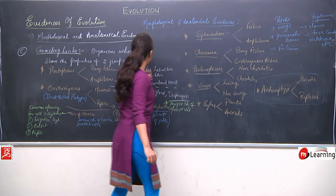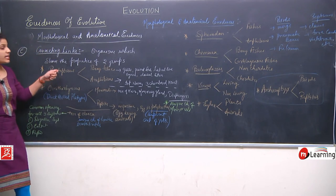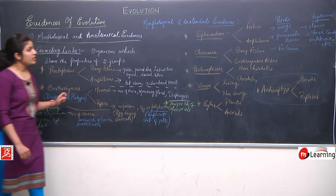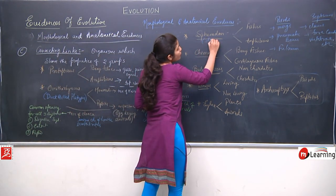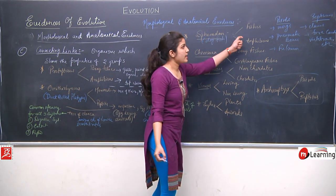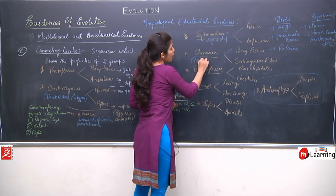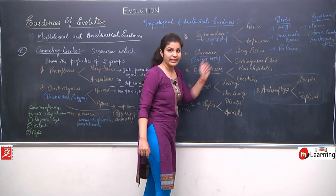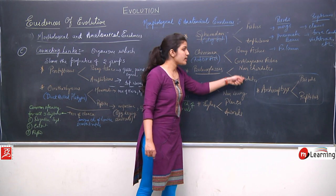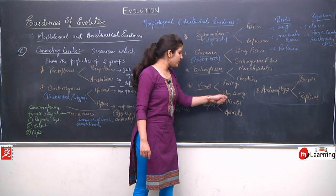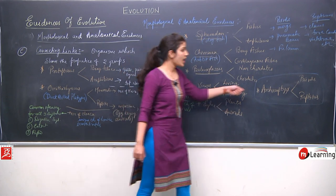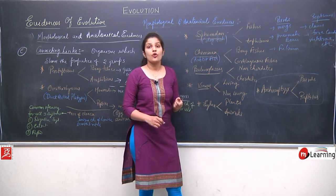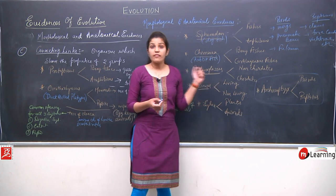To summarize the connecting links: Protopterus — bony fishes and amphibians; Ornithorhynchus — mammals and reptiles; Sphenodon (also called dogfish) — fishes and amphibians; Chimera (rabbit fish) — bony fishes and cartilaginous fishes; Balanoglossus — chordates and non-chordates; Viruses — living and non-living beings; Euglena — plants and animals; Archaeopteryx — birds and reptiles. Archaeopteryx will also be studied in detail under paleontological evidences of evolution in the next class.